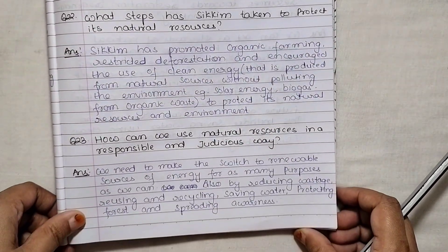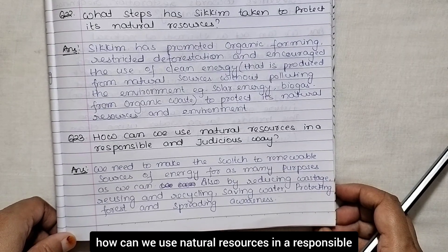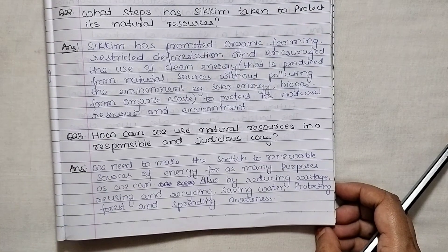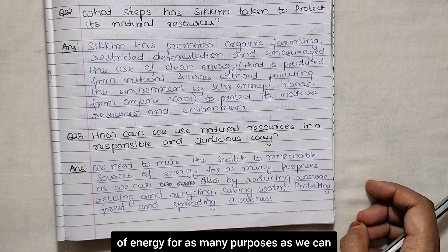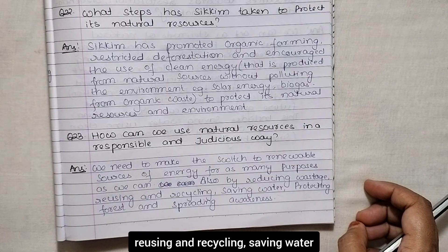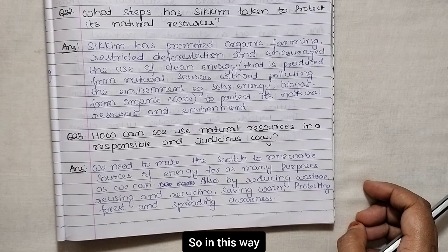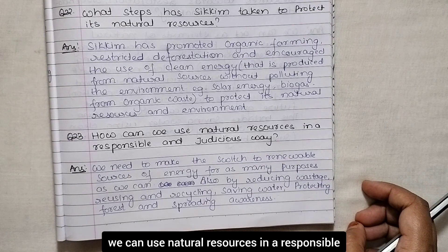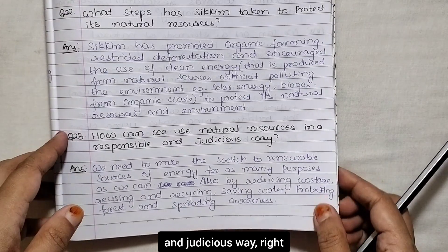Next: how can we use natural resources in a responsible and judicious way? We need to make the switch to renewable sources of energy for as many purposes as we can, and also by reducing wastage, reusing and recycling, saving water, protecting forests and spreading awareness.